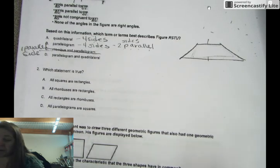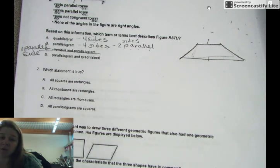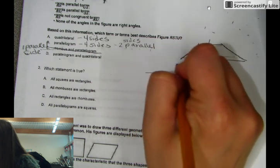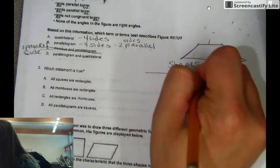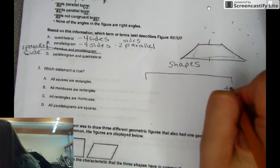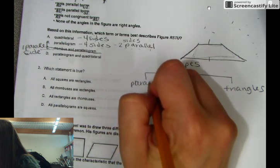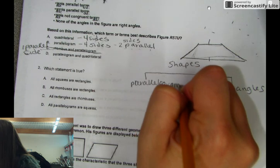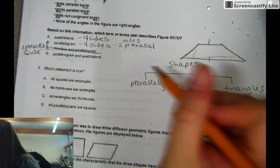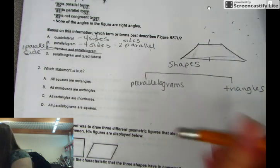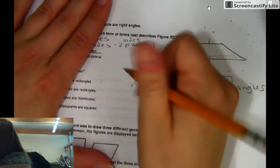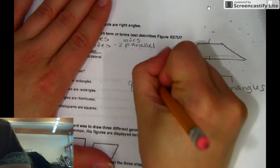Which statement is true? All squares are rectangles. All rhombuses are rectangles. All rectangles are rhombuses. And all parallelograms are squares. Remember when we started our hierarchy of shapes? We break it into triangles over here, and then you have parallelograms. Actually, you had quadrilaterals — that was the title.